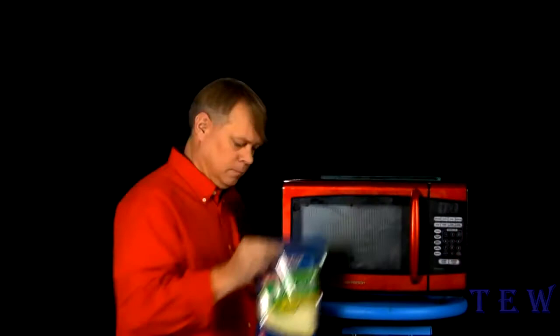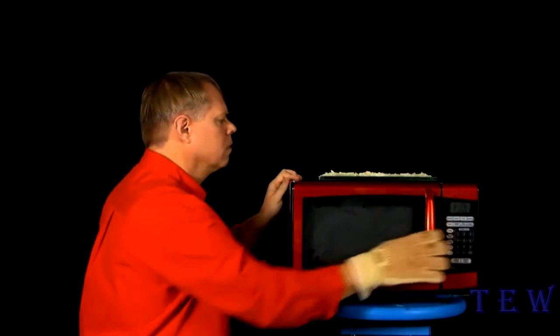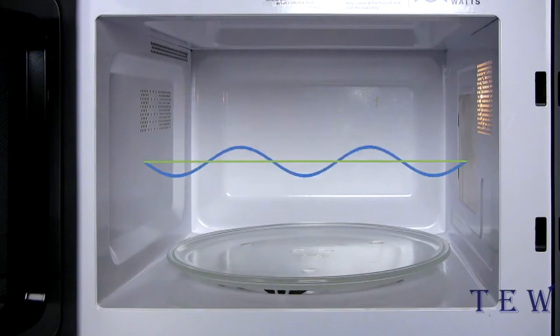You can get an idea of the wavelength of the energy emitted from the magnetron using cheese. You can see sections where the cheese is completely melted and other sections where it's completely unheated. The oven's metal walls only reflect waves of a length that fits inside the oven. This standing wave causes hot and cold spots inside the oven.